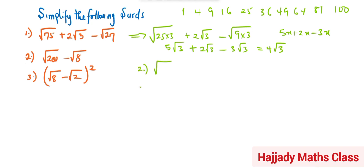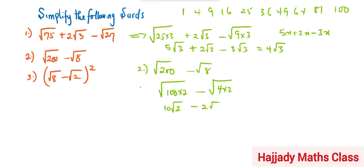In question number 2, we have root 200 minus root 8. Root 200 can be simplified as root 100 times 2, minus root 4 times 2. Root 100 is 10, so this becomes 10 root 2 minus 2 root 2. Adding the coefficients together, 10 minus 2 gives us 8 root 2.